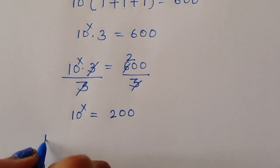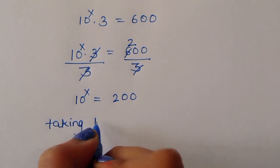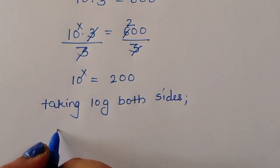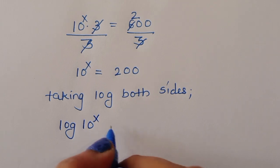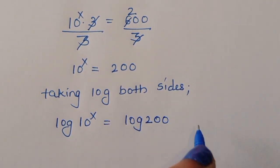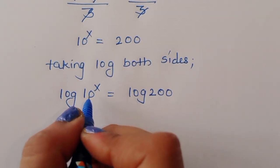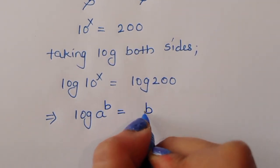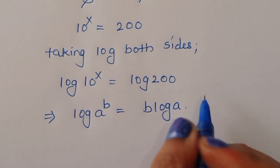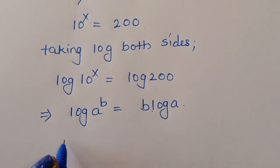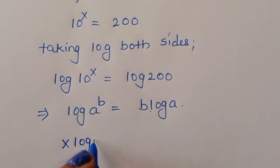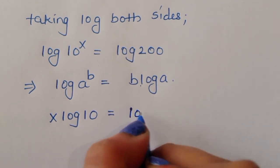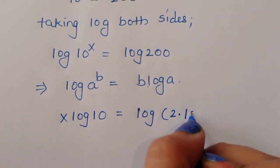Taking log on both sides, we get log(10^x) = log(200). Using the power rule, log(10^x) becomes x·log(10), so x·log(10) = log(200).